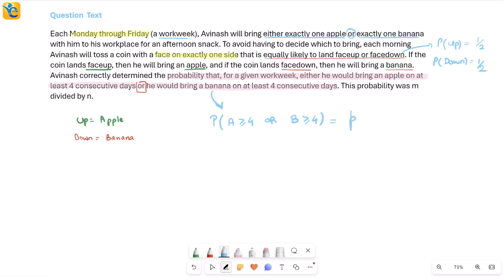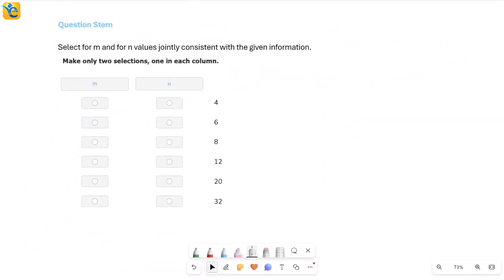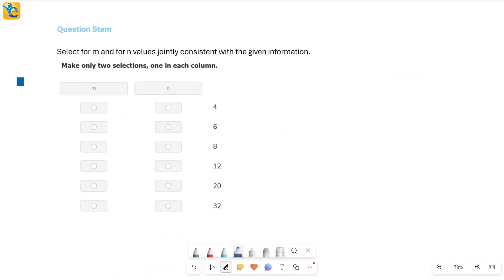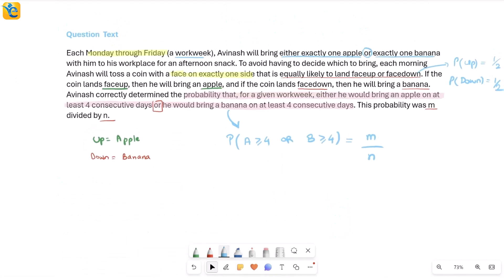This probability they say was m divided by n, which means I don't need to write this P here, I'll just say this probability is equal to m over n. At this point I will not just jump into finding this entire probability; I have to know what the question wants. It says select for m and n the values that are consistent with the information, so I really do need to find that probability which was m over n.